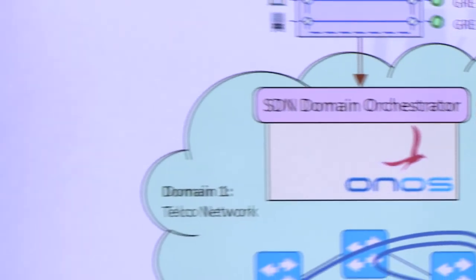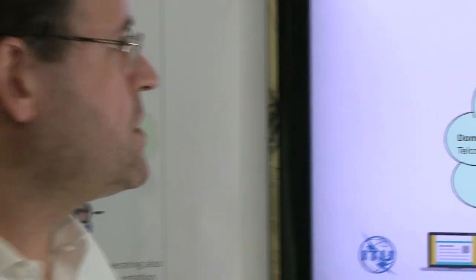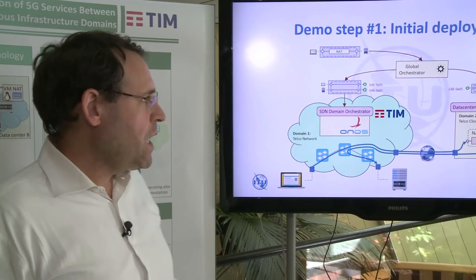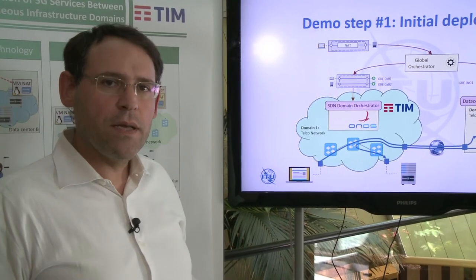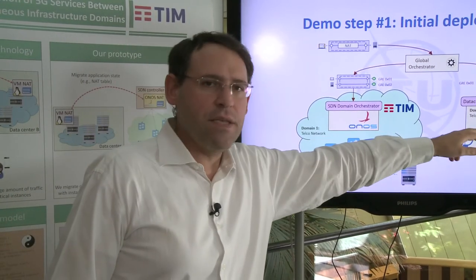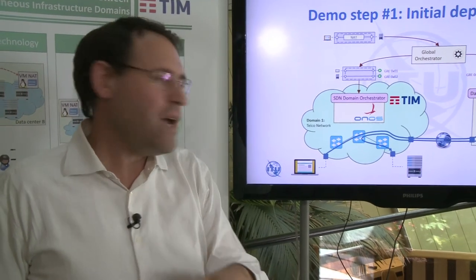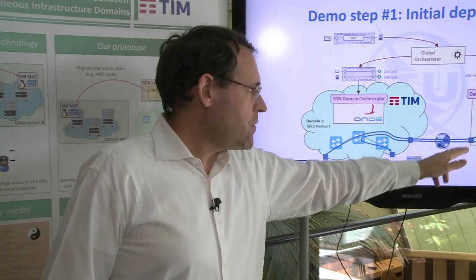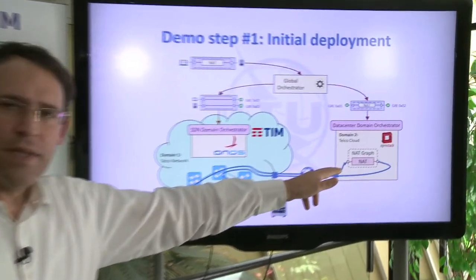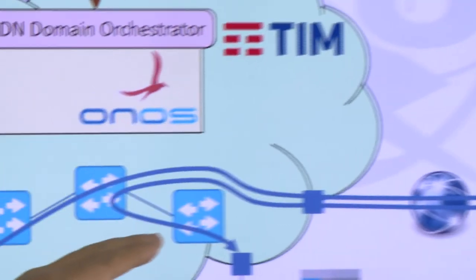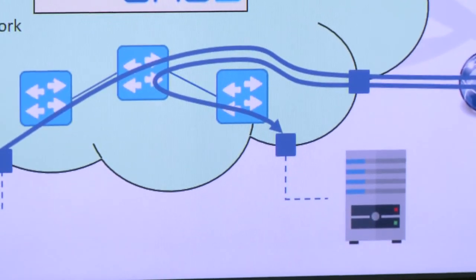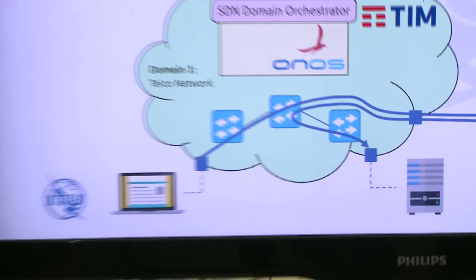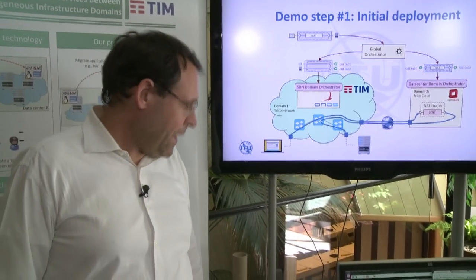This is the service we're requesting from the global orchestrator. The global orchestrator receives a request to deploy a NAT, and deploys it in the data center domain. This forces traffic to travel from the user to the data center domain, through the NAT, and back again to the data center domain where the server is. This is the starting point of our demo.